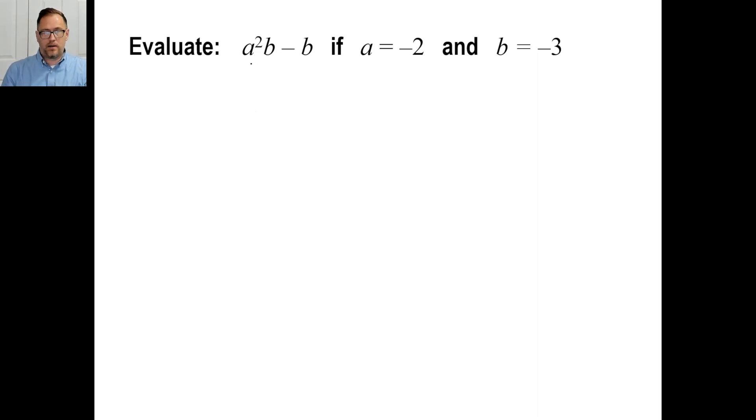Pause it and try A. Okay. Well, let's do this. So, a squared means negative 2 times negative 2. That gives us 4. Times B. What's B equal? Negative 3. Just put in parentheses negative 3. You're multiplying. Minus. Copy the minus. B is negative 3. Copy your negative 3. Put parentheses.